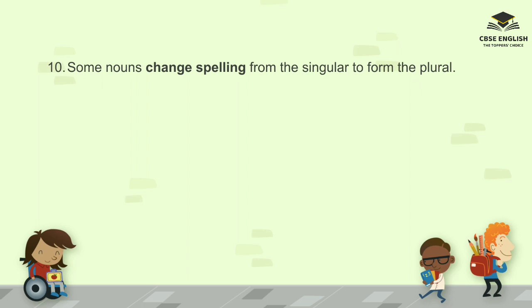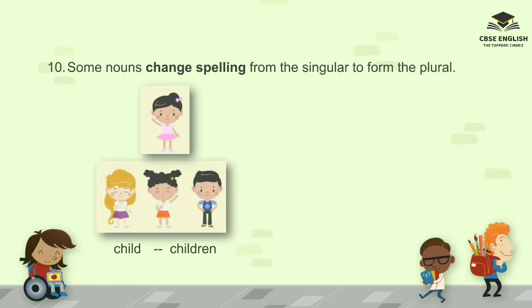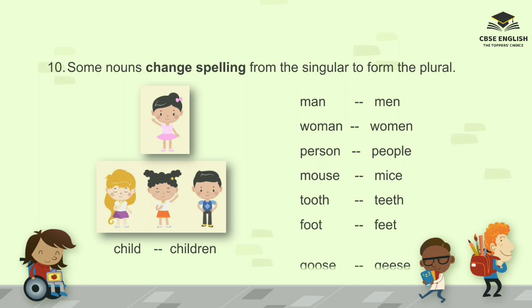Number ten: some nouns change spelling from the singular to form the plural. For example: child, children; man, men; woman, women; person, people; mouse, mice; tooth, teeth; foot, feet; goose, geese.